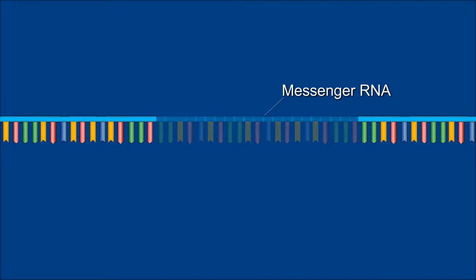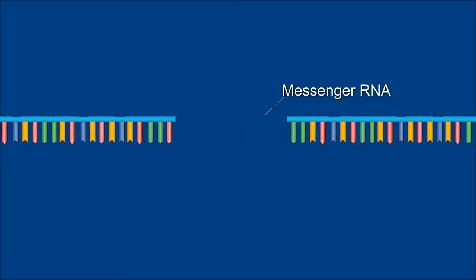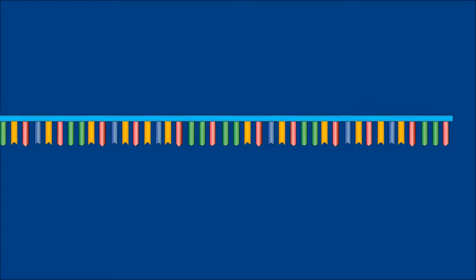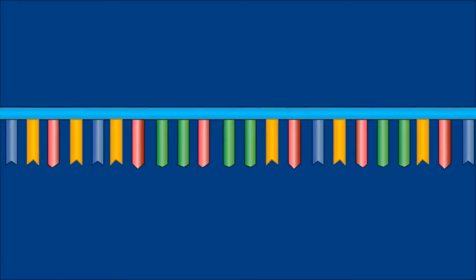The DNA code determines the type of bases that are added to the growing mRNA chain. This process of forming mRNA from the code of DNA is called transcription.